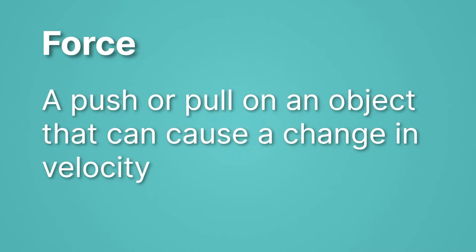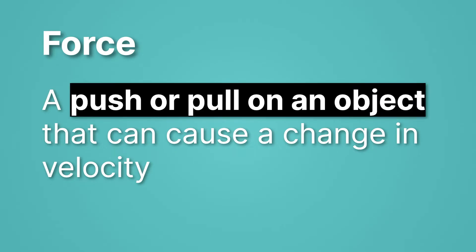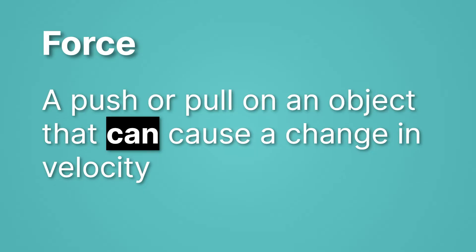First, let's look at the qualitative definition. It's a push or pull on an object that can cause a change in velocity. Let's look at each part of that. It's a push or a pull on an object. So that means we're pushing or pulling on something, to hopefully, in some cases, make it move. And that some cases it can move is highlighted by the word can.